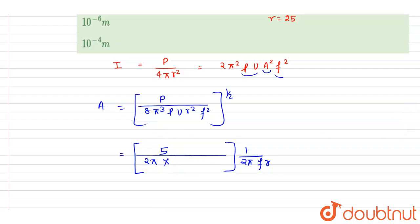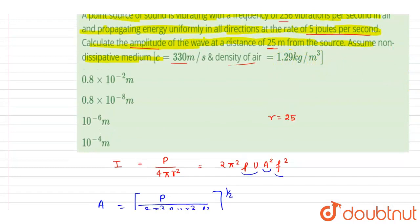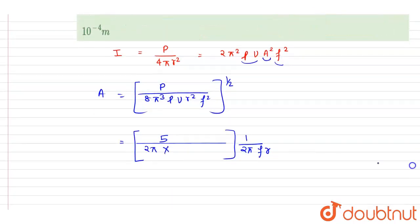Now ρ, if you see, the ρ value is the density of air, which is 1.29 kg/m³, and the speed is 330 m/s. So these are the values.